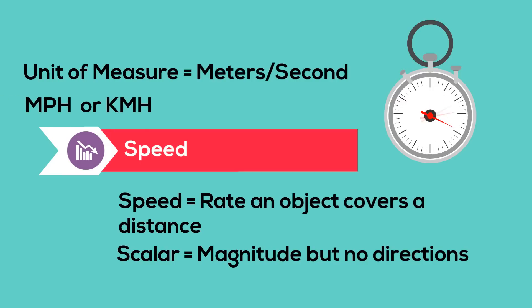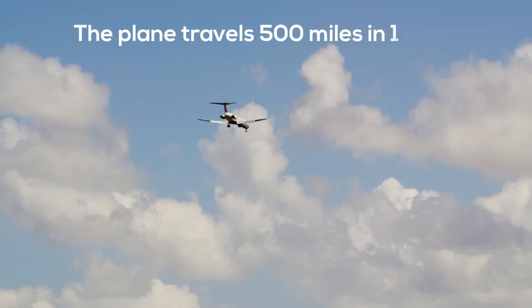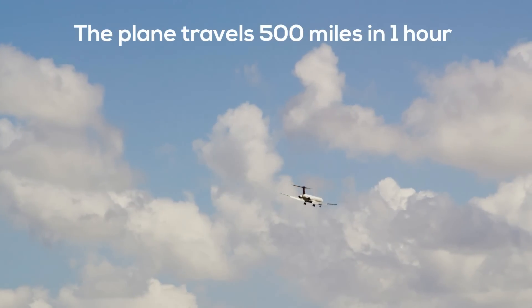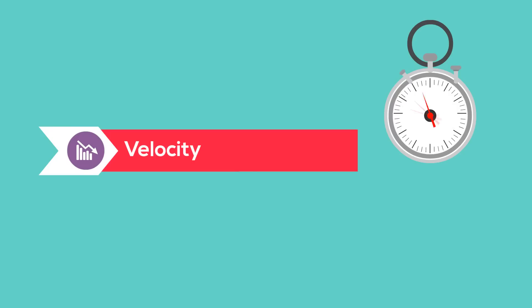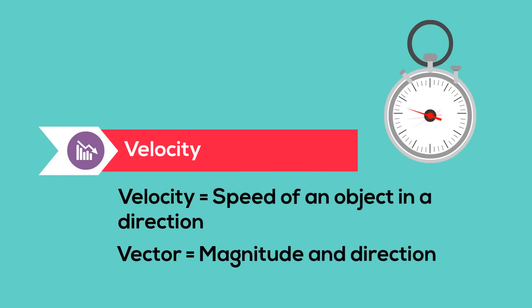For example, this plane can travel 500 miles in an hour. Velocity is the speed of an object in a certain direction. It is a vector, which means it measures magnitude and direction.